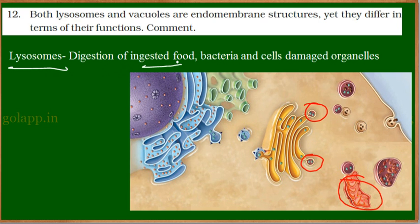Lysosomes help in digestion in lower organisms such as paramecium and amoeba. In higher organisms, when bacteria enters a cell, the bacteria will be killed by the lysosomes. Lysosomes also help in digestion of damaged cell organelles — old cell organelles which are of no more use to the cell will be degraded by the lysosomes.